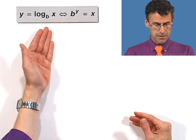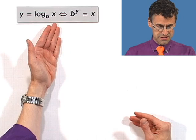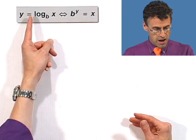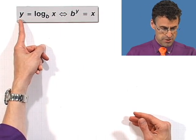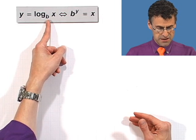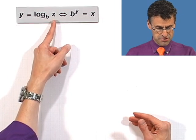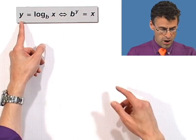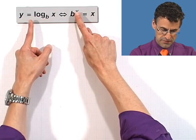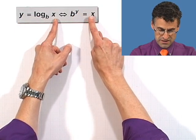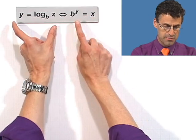If I say y equals log base b of x, what does that mean? Well, a log equals the exponent that I have to raise the base b to in order to get x. So a log y is the exponent I have to raise b to in order to get x. So this statement and this statement are identical.